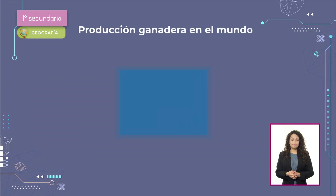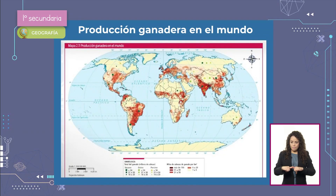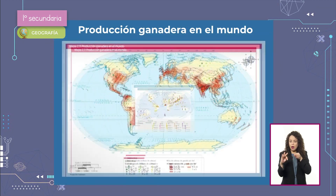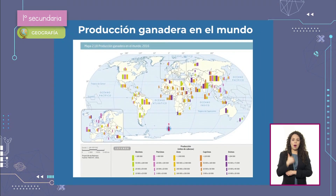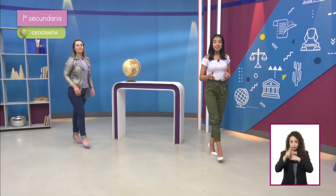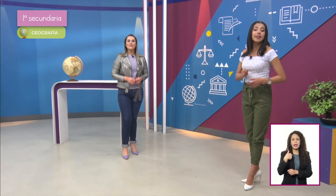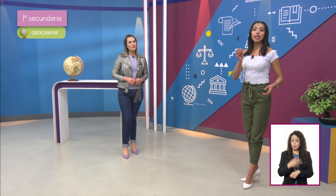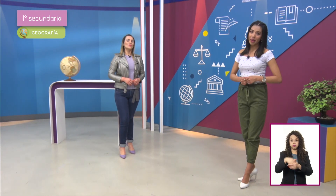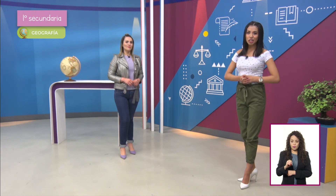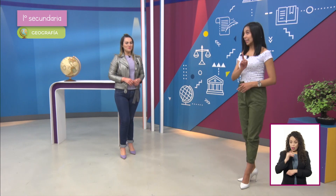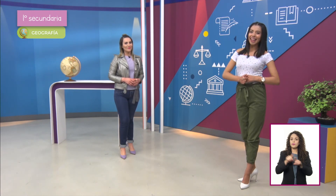Distingamos con la ayuda de los mapas la distribución de la actividad ganadera en el mundo, destacando que los países cercanos a los trópicos aprovechan su clima, suelo y disponibilidad de agua para la crianza de animales. En cuanto a la producción pesquera, esta actividad dio lugar al desarrollo de grandes puertos pesqueros en las costas de Europa, en el mar Mediterráneo, en las costas occidentales de Estados Unidos de América y México, y también en las costas orientales de China y Japón.